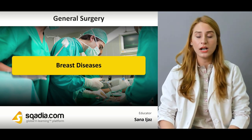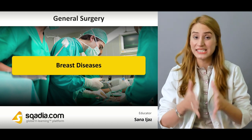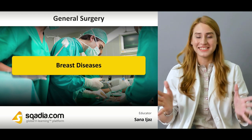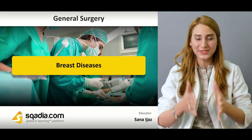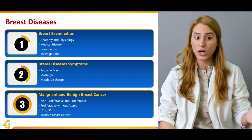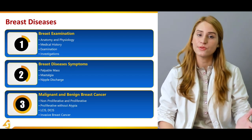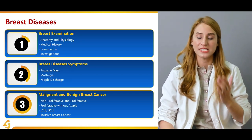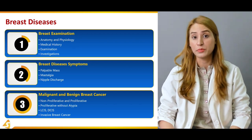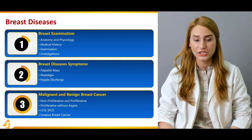I have planned to divide this big topic into three different sections. We're going to talk about section one, which includes breast examination. Section two is about the breast diseases and the symptoms, and section three is about malignant and benign proliferation happening in the breast tissue.